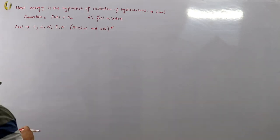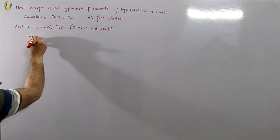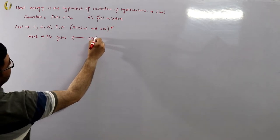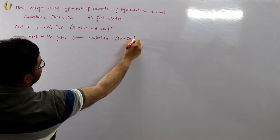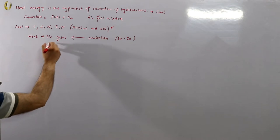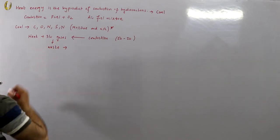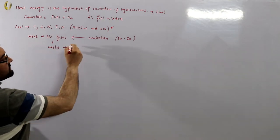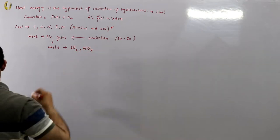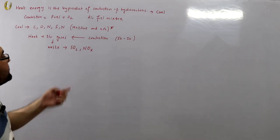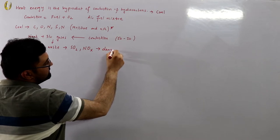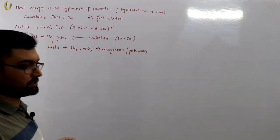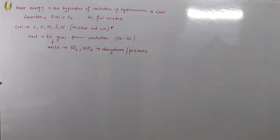When combustion takes place — fuel plus oxygen — the result is heat plus flue gases. These flue gases are a waste product of combustion. They consist of oxides: sulfur combines with oxygen to form sulfur dioxide, and nitrogen combines with oxygen to form oxides of nitrogen. These are the most dangerous and poisonous gases, resulting in environmental pollution and serious health hazards.